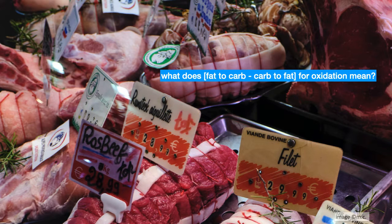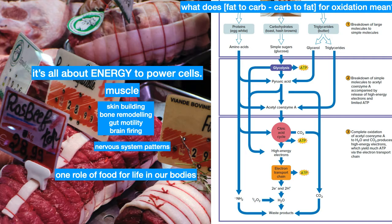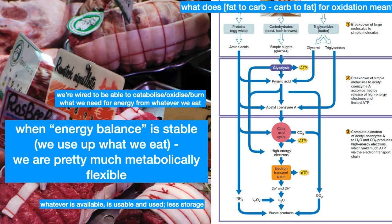So what does this fat-to-carb or carb-to-fat oxidation actually mean? It's about energy to power cells. Cells do a whole bunch of things: skin building, bone remodeling, how our guts move, how neurons in our brain signal and fire. There are many types of fuels we can ingest — at least three: proteins, carbs, and fats. This is particularly looking at the carb and fat processes and how oxygen is used. We're not talking about ketone bodies or the phosphocreatine cycle — focusing strictly on how main fuels are oxidized.